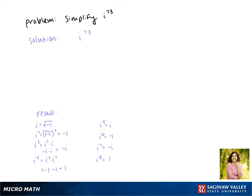To use this to help us simplify i to the 73rd power, we'll look for the closest multiple of 4 without going over. That would be 72. So we can rewrite this as i to the 72nd times i to the 1st.